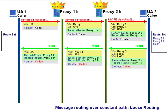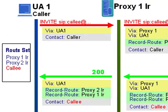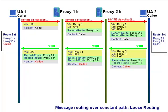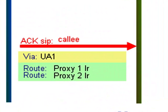When this final response arrives upstream, the user agent client copies all the Record-Route addresses into its route set, together with the callee's contact address. The order of the Record-Route addresses is also reversed as he copies. Now, the user agent takes the bottom address from its route set and copies it into the request URI of the outgoing subsequent request — but does not route the request to that address. It then takes the other addresses stored in its route set and copies them into Route headers — the whole Route header list.